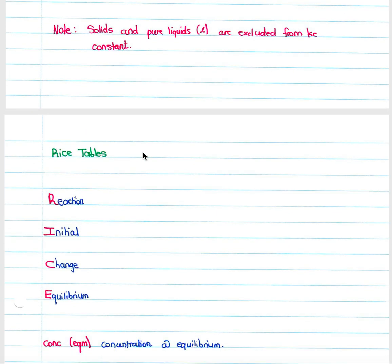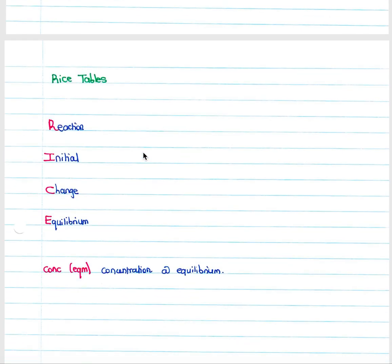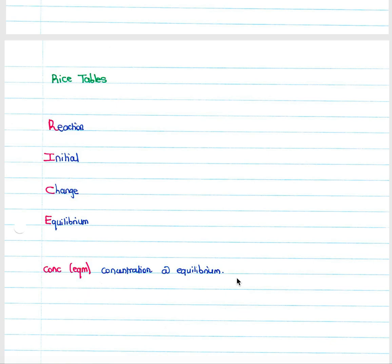A very handy method to calculate equilibrium constants and concentrations is the RICE table. You set it up with your reaction written out, your initial concentrations (products are normally zero initially), and your change row. They will normally give you an equilibrium concentration so you can work out the change, and through this you can determine all unknowns and the equilibrium constant. This will be covered in detail in an upcoming chemistry questions and answers lesson with worked examples.